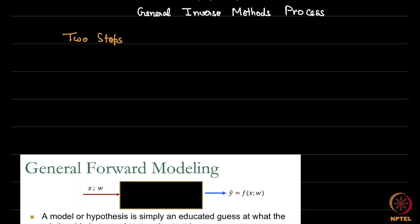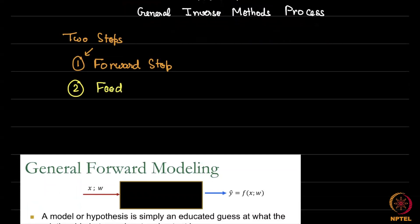The inverse methods process generally involves two steps. There is what we call the forward step, which I discussed earlier in the first week, and then there is the second step which we can call the feedback step or the inverse step.